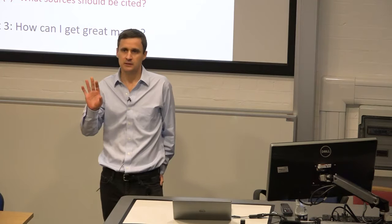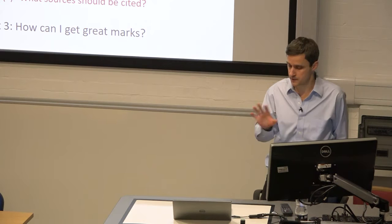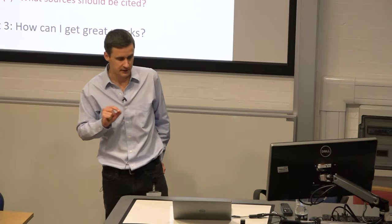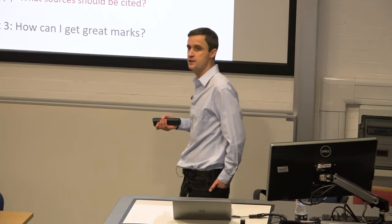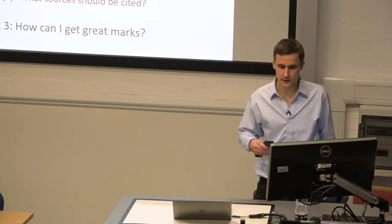What I'd like to move on to now is the second part of today's session and ask: how do you write a research paper? This should hopefully be useful as you yourselves come to write up your own research projects and your own work. I'm going to cover two points: firstly, how should you structure a research paper — what sections should be included and what should you include in each of those sections — and then also what sources should you be citing in your own paper.